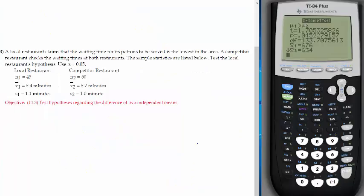Okay, number 18. A local restaurant claims that the waiting time for its patrons to be served is the lowest in the area. A competitor restaurant checks the waiting time at both restaurants. The sample statistics are listed below. That's the local restaurant hypothesis.